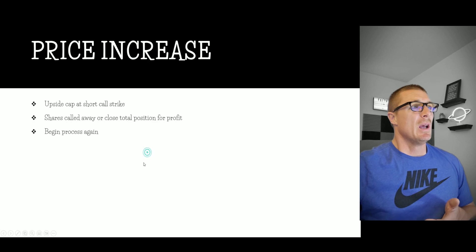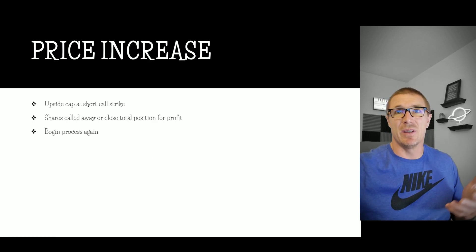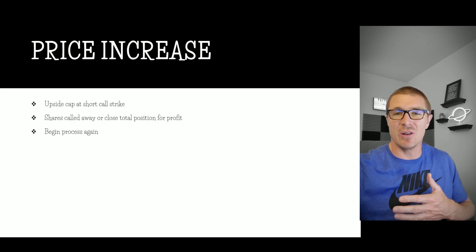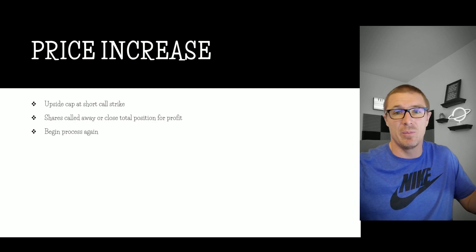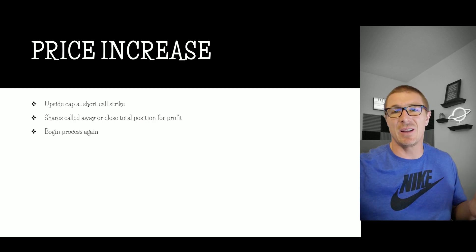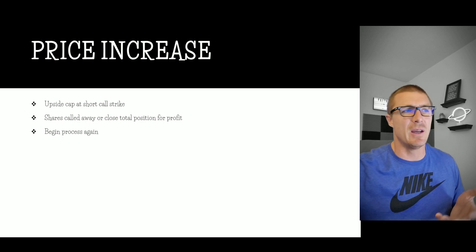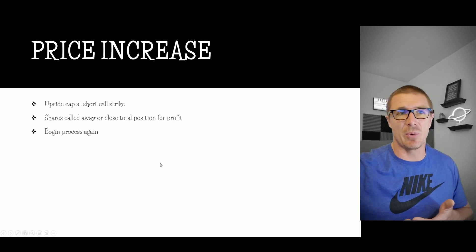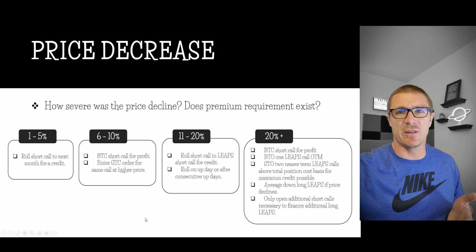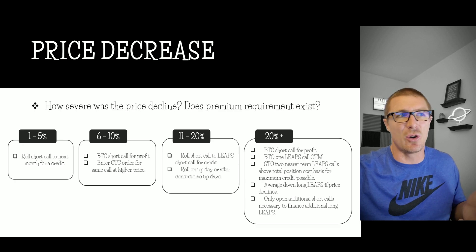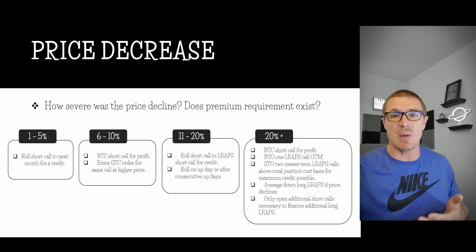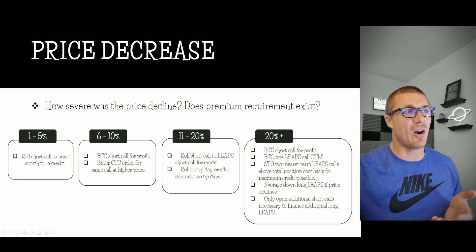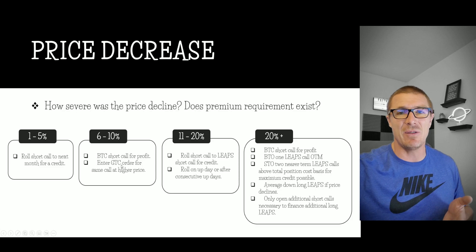If there's a price increase, you basically want to take the profits. You can let the shares get called away — if the called-away return nets you more money, let them get called away and start the position again. If it's better to close the call in the open market and close the shares, do that. If price has decreased, ask yourself: how severe was the price decline? Does the premium requirement still exist? If it doesn't, you've got to start thinking about rolling to a LEAP option or some of these other adjustments. They're all fairly interchangeable — you can use any of them at any given time.